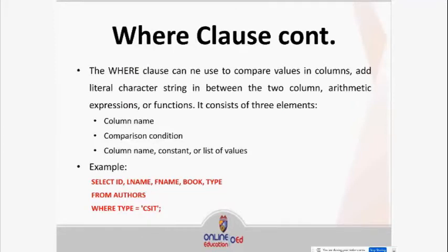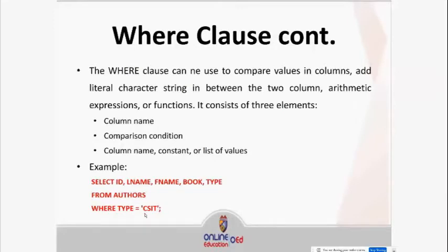The WHERE clause can add literal character strings, arithmetic expressions, or functions, and consists of three elements: the column name, the comparison condition, and then a column name, constant, or list of values. The basic format is: SELECT column names, FROM table name, WHERE column name comparison_condition value.